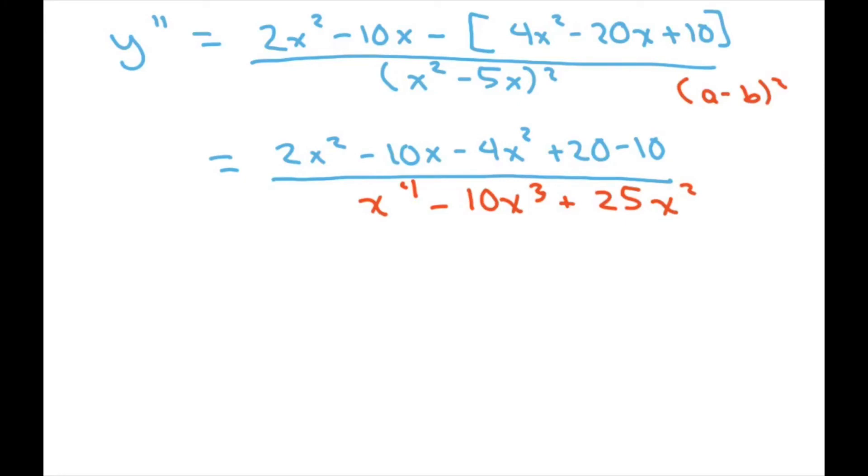So then what you're going to get is, clean up the numerator some more, and you're going to get negative 2x squared plus 10x, so minus 10x, sorry.